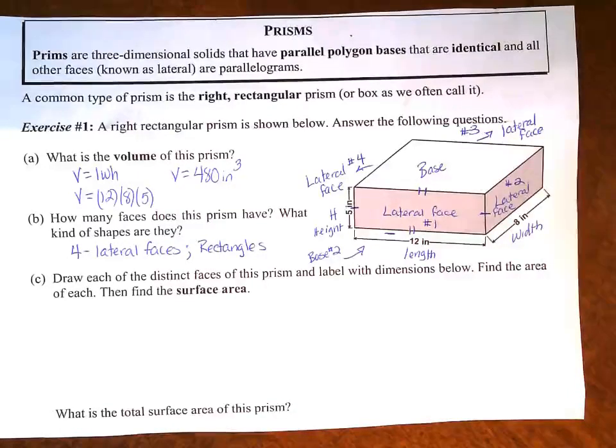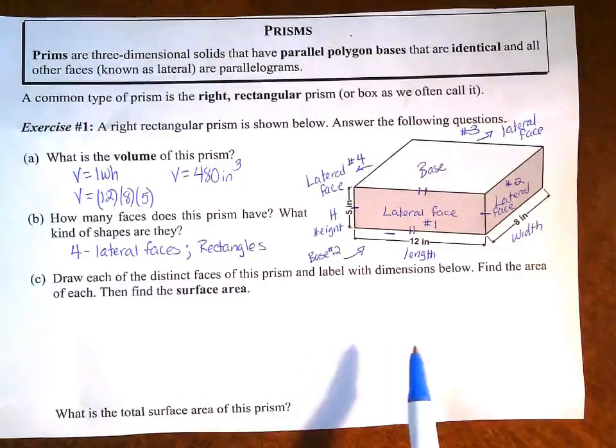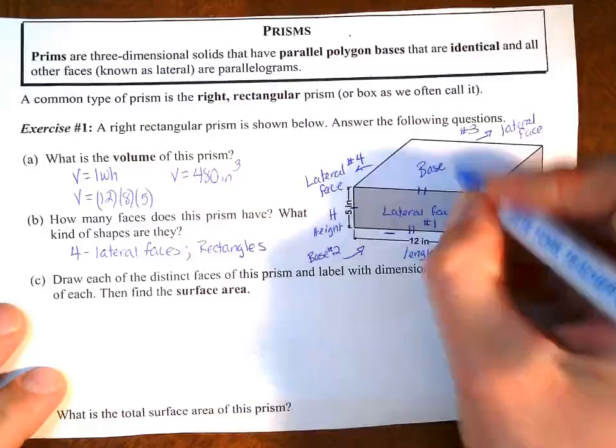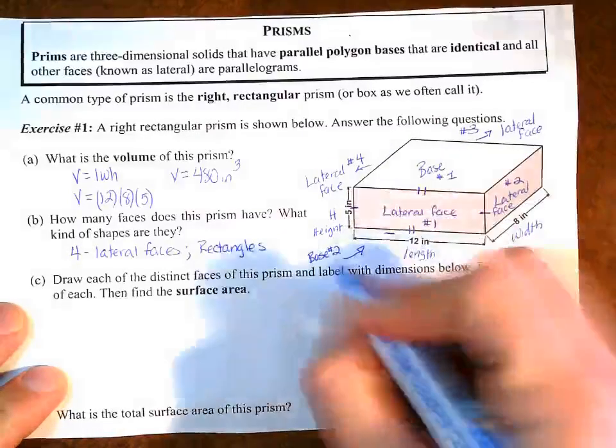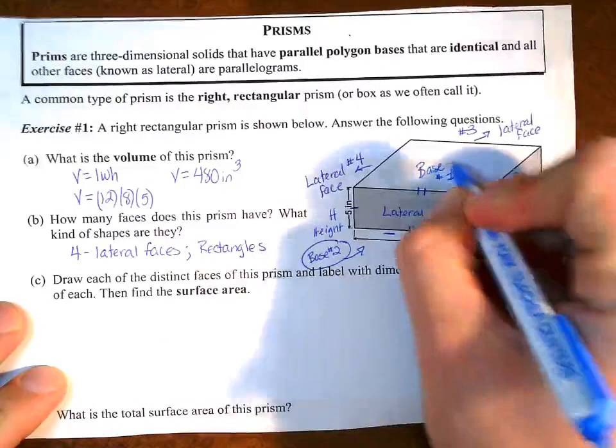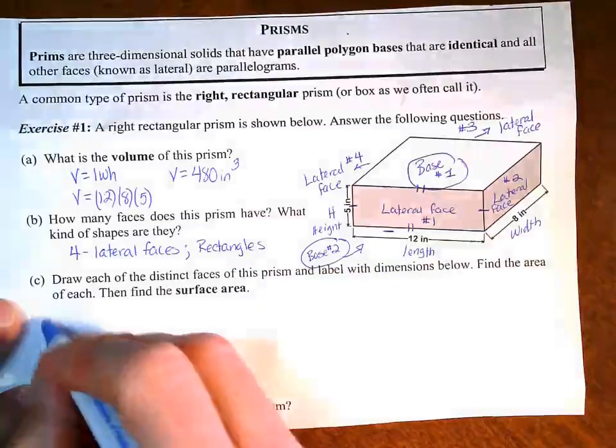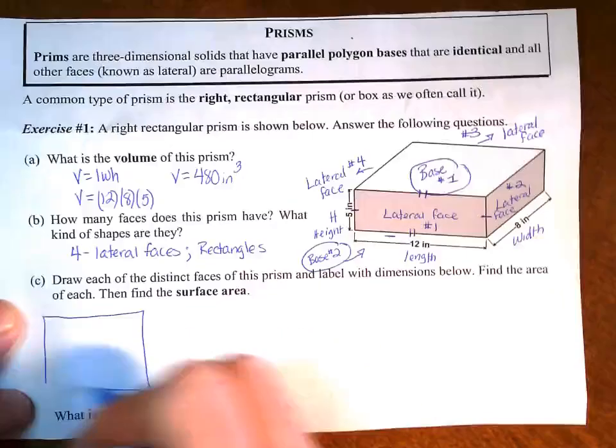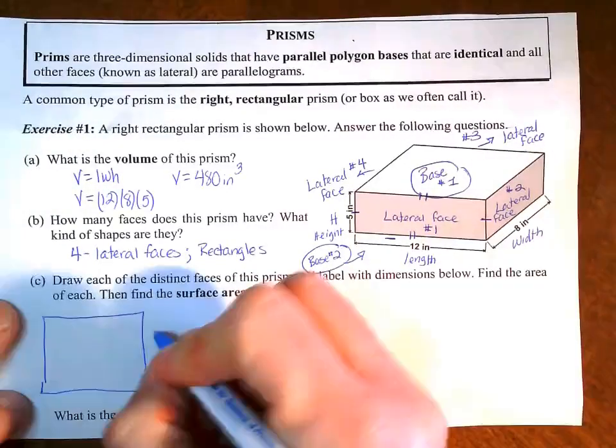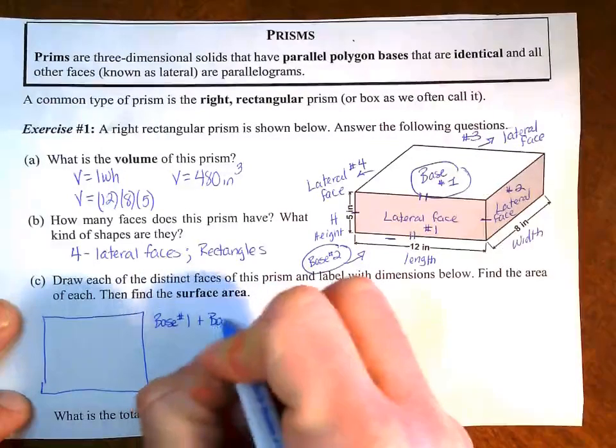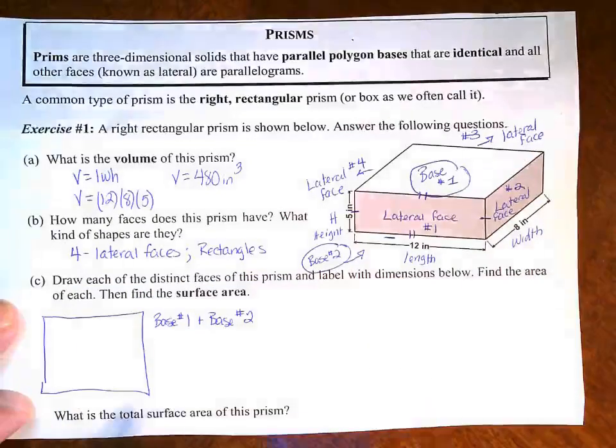So the one thing that we have to look at here, and it's saying it in C. It's saying, draw each of the distinct faces of the prism and label with dimensions below. Find the area of each. So now we're looking at surface area or area in general. So we're dealing with rectangles, even our bases. This is base number 1. And underneath here, which we can't see, that's base number 2. So I'm going to circle this. So what they mean by drawing this is, okay, so we have our bases. So I have two bases, and they're also a rectangle. And the bases are the same. So base number 1 plus base number 2. Once we figure out the area of this, and we know what our dimensions are.